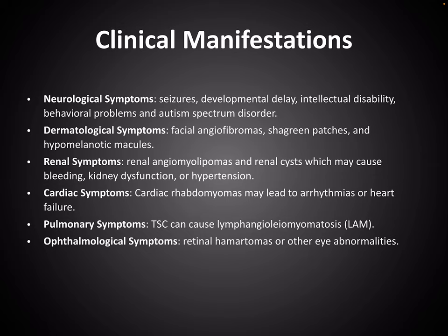Dermatological symptoms such as facial angiofibromas, shagreen patches and hypomelanotic macules. Renal symptoms in form of renal angiomyolipomas and renal cysts which may cause bleeding, kidney dysfunction or hypertension. Cardiac symptoms — cardiac rhabdomyomas — lead to arrhythmias or heart failure. Pulmonary symptoms: TSC can cause lymphangioleiomyomatosis. Ophthalmic symptoms such as retinal hamartomas or other eye abnormalities.